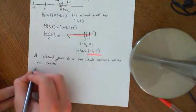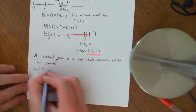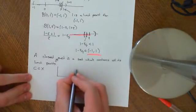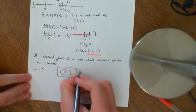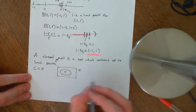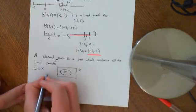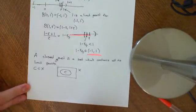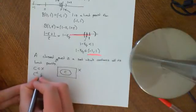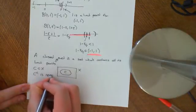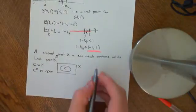If a set is closed, so let's take C, which is a subset of a metric space X. We have some set C here which is a closed set, and we want to prove that it contains all its limit points. The definition of being closed is that its complement is open — so C complement is open. The way we're going to prove this is a proof by contradiction.